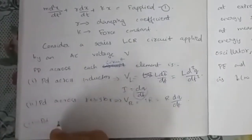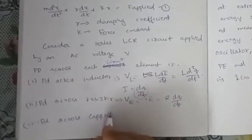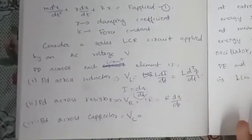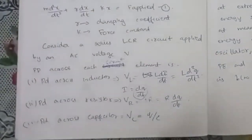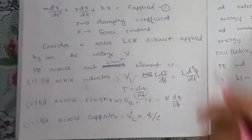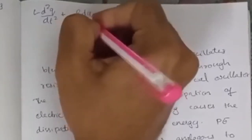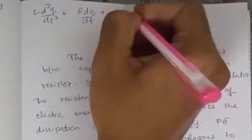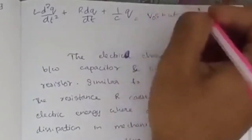Potential difference across the capacitor is Q/C. So the total equation is: L d²Q/dt² plus R dQ/dt plus Q/C equals E₀ sin(ωt). This is the total potential difference equation.